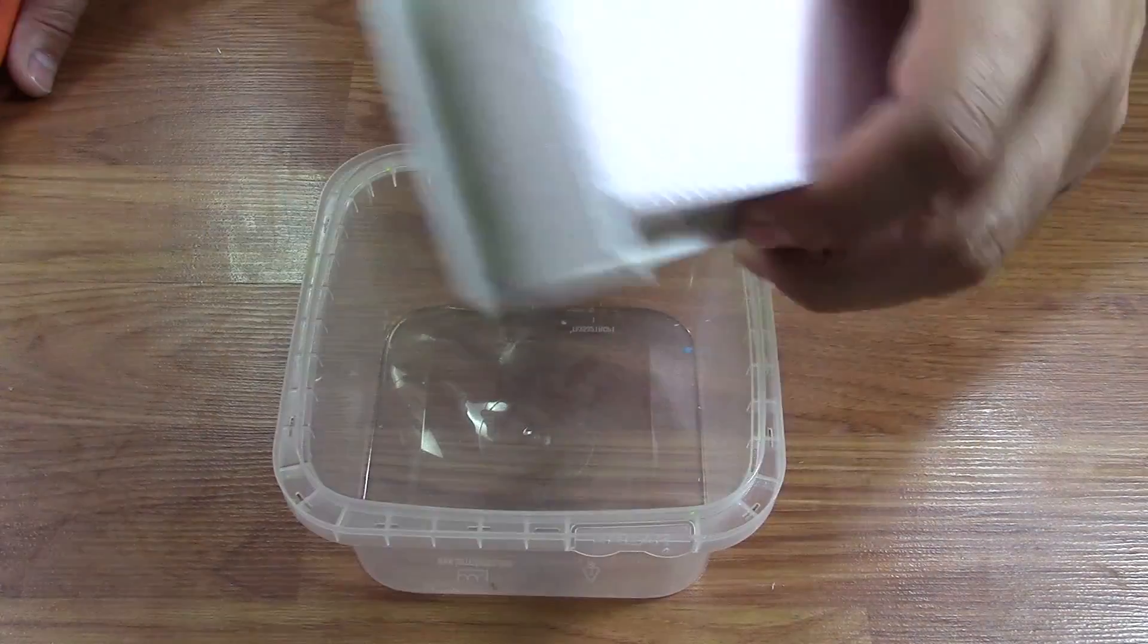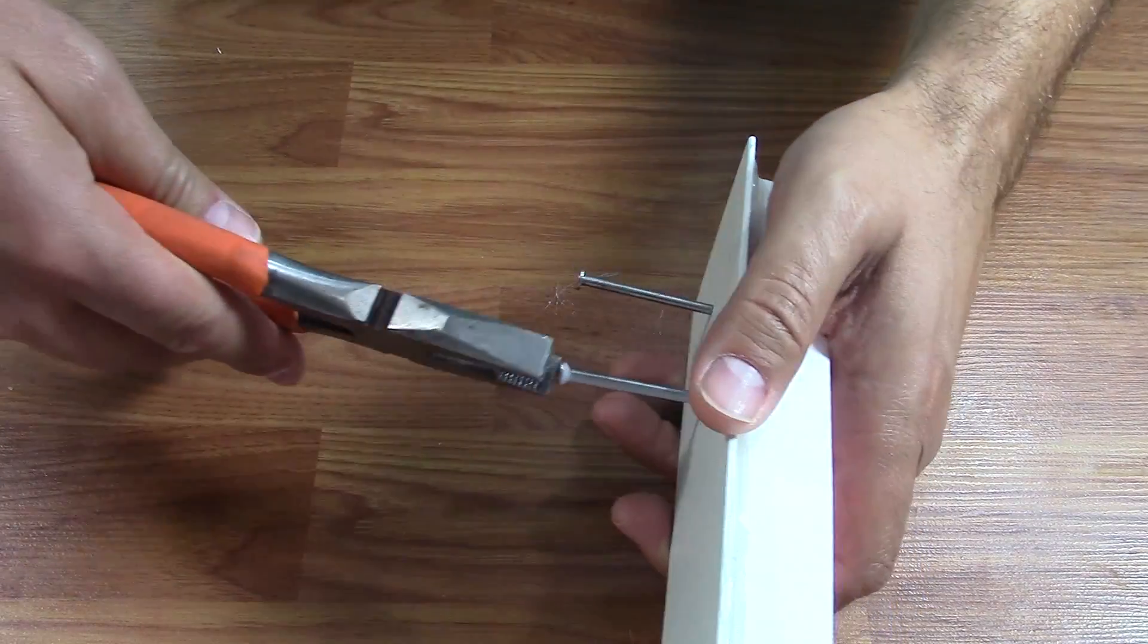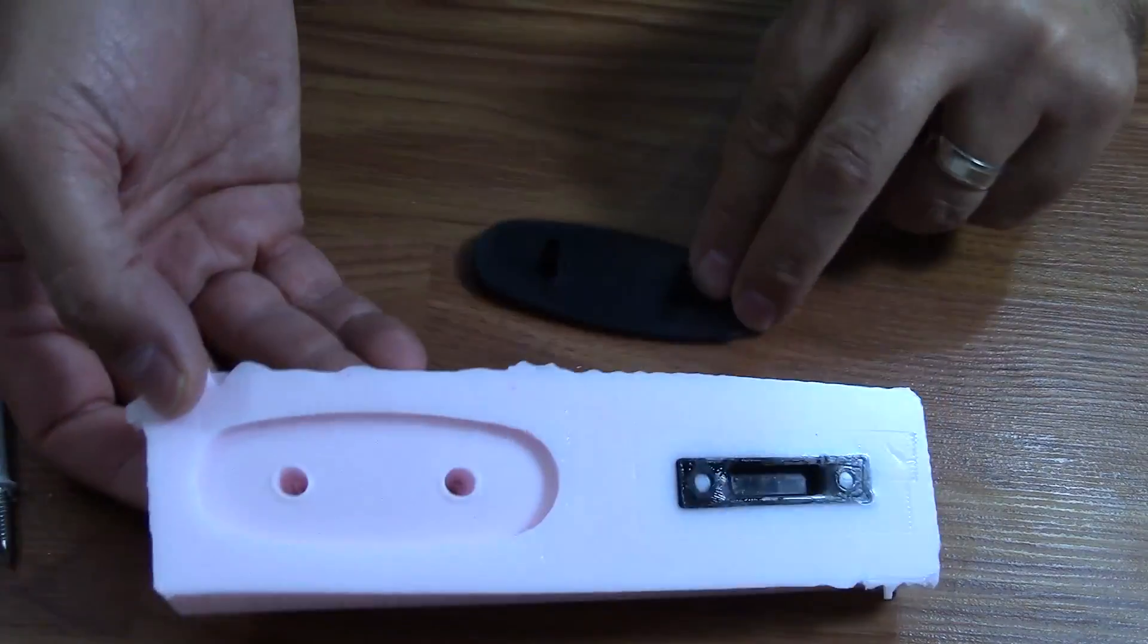The next day when the silicone was cured, we removed our nails which gave us our channels, and our part, and then removed our originals. Now we're ready to make replicas.